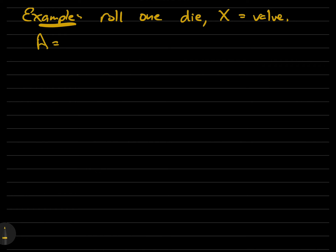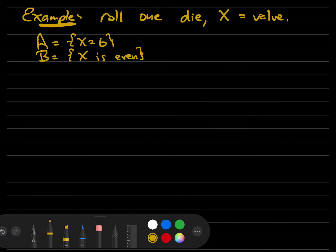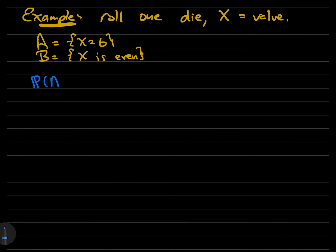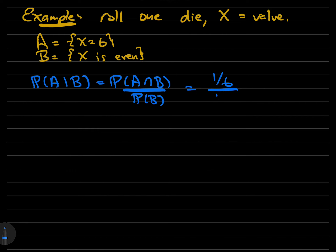Let's consider the two events. A is the event that X is a six, and B is the event that X is even. So we can compute directly: the probability of A given B is the probability of A intersect B over the probability of B. A intersect B is A itself, which has probability one-sixth. The probability that B is even: there are three out of six even numbers, so that's one-half. So the conditional probability is one-third.